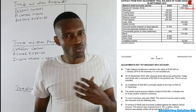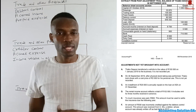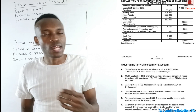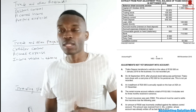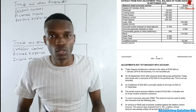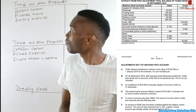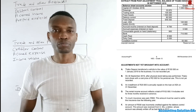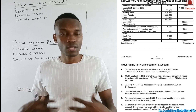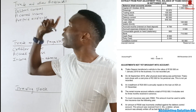Under trading other receivables, the first item is debtors control. Clients who purchase from us on credit are called debtors, and we record them under debtors control. Any transaction related to bad debts not yet recorded must be adjusted under debtors control. We also have accrued income — this is income that someone owes us but hasn't yet paid, which is why it falls under trading other receivables.